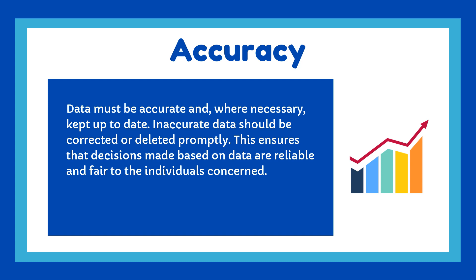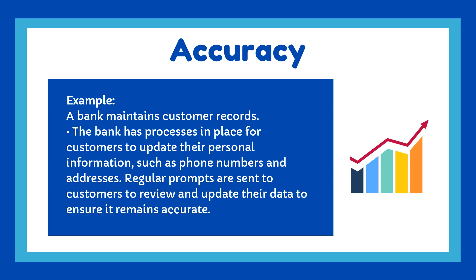4. Accuracy. Data must be accurate and, where necessary, kept up to date. Inaccurate data should be corrected or deleted promptly, ensuring that decisions made based on data are reliable and fair to the individuals concerned. Example: A bank maintains customer records and has processes in place for customers to update their personal information, such as phone numbers and addresses. Regular prompts are sent to customers to review and update their data to ensure it remains accurate.